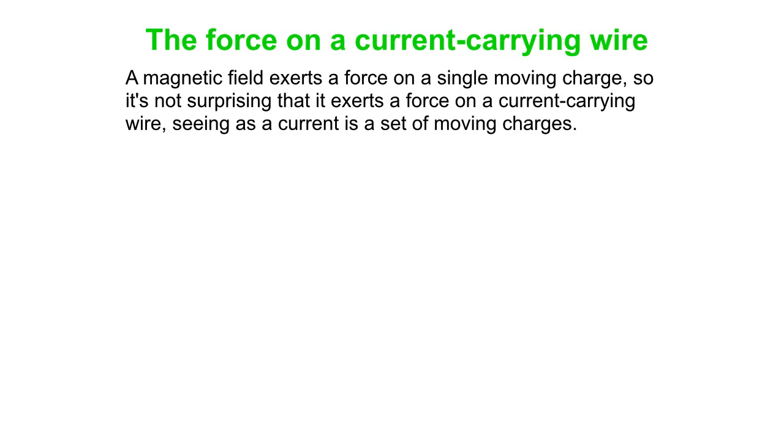The force on a current-carrying wire. A magnetic field exerts a force on a single moving charge, so it's not surprising to us that it exerts a force on a current-carrying wire. Well, a current is a whole set of moving charges.